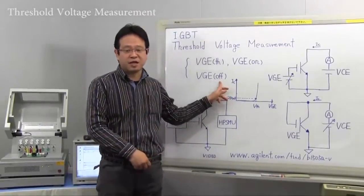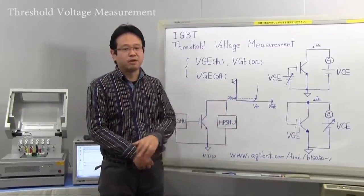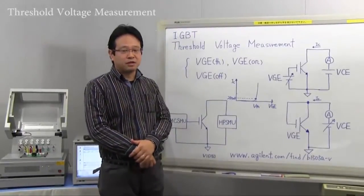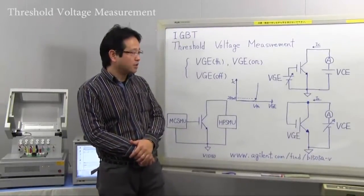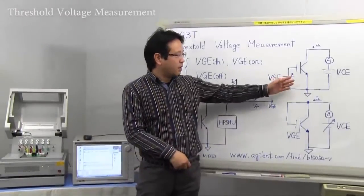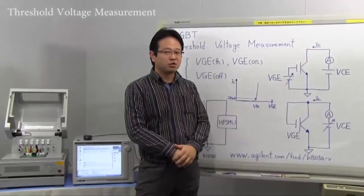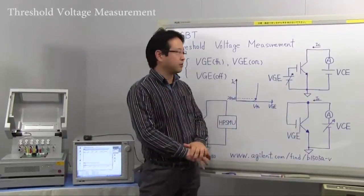These parameters are measured at the same measurement setup. There are two measurement definitions. One is to apply the collector emitter voltage to the collector terminal, then sweep the gate emitter voltage to detect the collector emitter current.